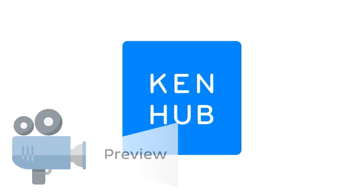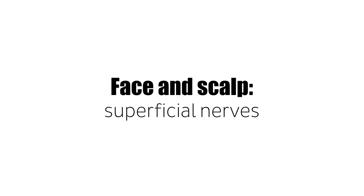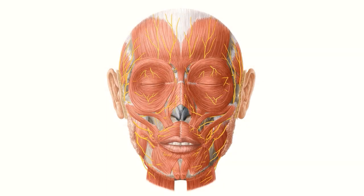Hello everyone, this is Juan from KenHub and welcome to another anatomy tutorial where this time we're going to be talking about the superficial nerves of the face and scalp. We're going to be looking at an image like the one you see on your screen right now — the anterior view of the face and scalp — where you can see all these yellow structures which are the superficial nerves of the face and scalp.